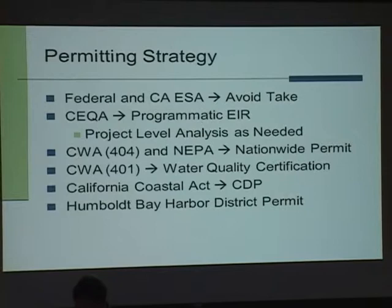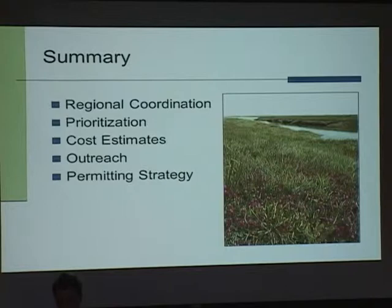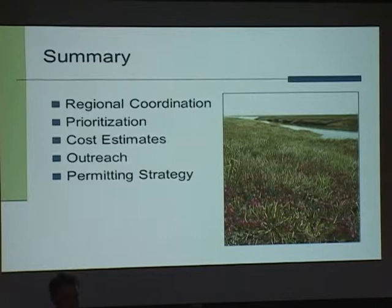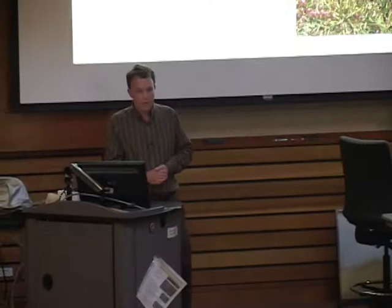In summary, the plan provides mechanisms for regional coordination of efforts resulting in improved efficiencies; a process for constantly reprioritizing efforts in terms of where to treat and what methods to use based on new incoming information; cost estimates important both for reprioritization and for pursuing funding — since it's very helpful to tell a potential funder how much the project will cost; an outreach strategy to involve the public and all necessary parties; and a permitting strategy aimed at more efficient, consolidated permitting.